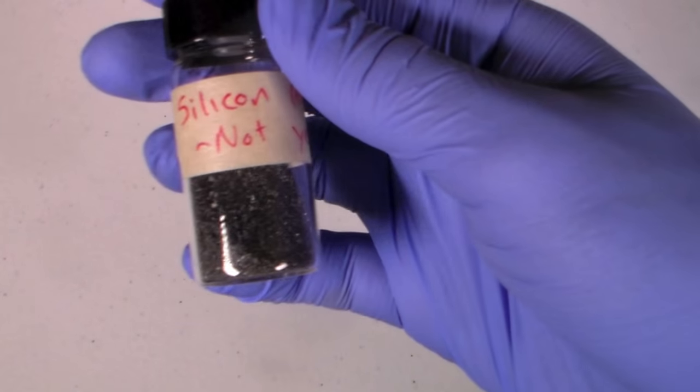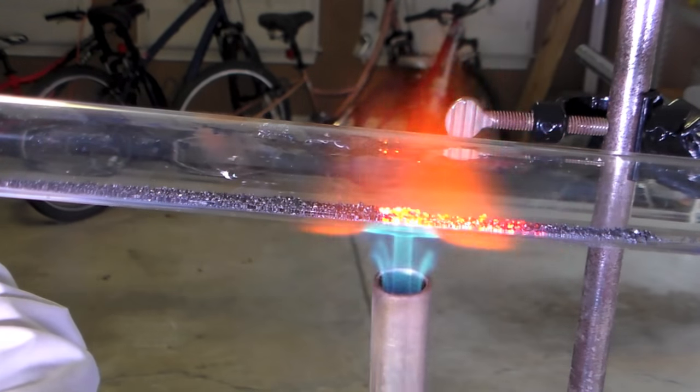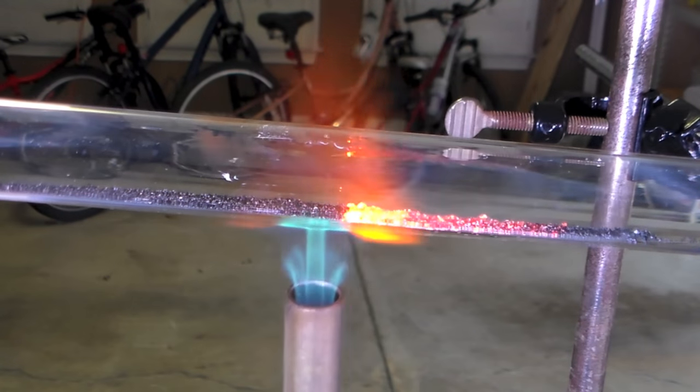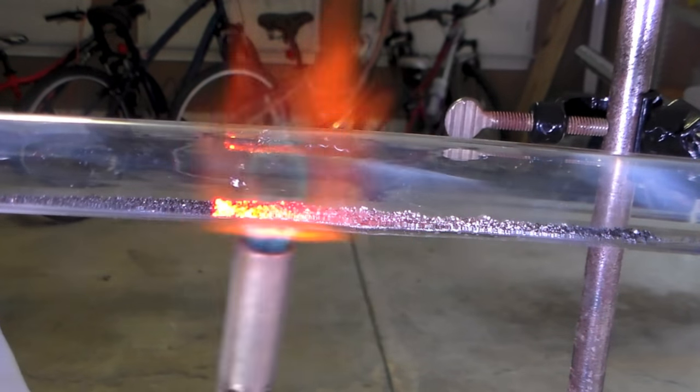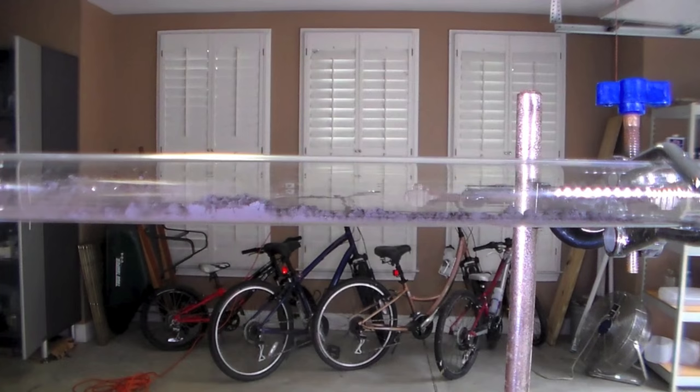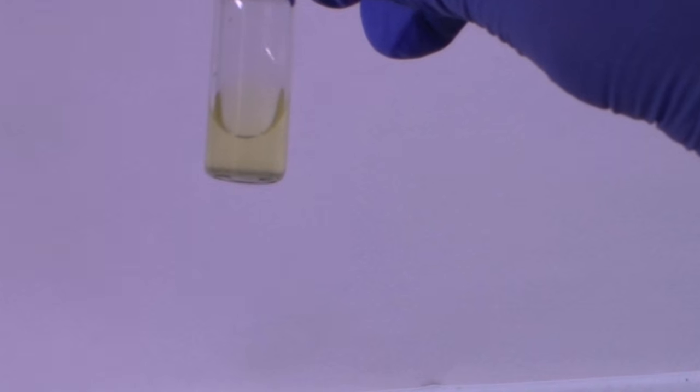I also tried this reaction using the silicon that I synthesized myself. Despite the silicon clearly reacting with the chlorine, I didn't collect any product. However, I think this is simply because I didn't use enough silicon. As I showed before, you need a lot of silicon to get even a small amount of product because of how inefficient the reaction is.